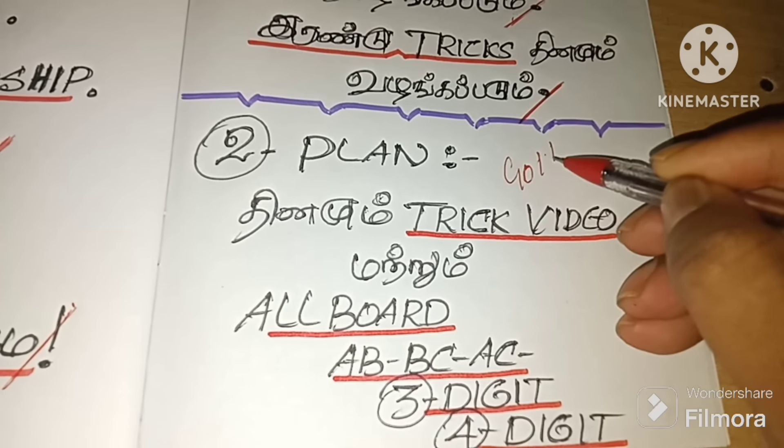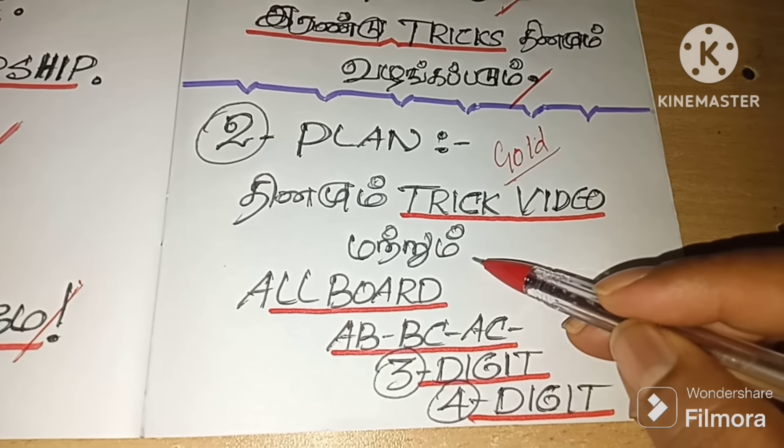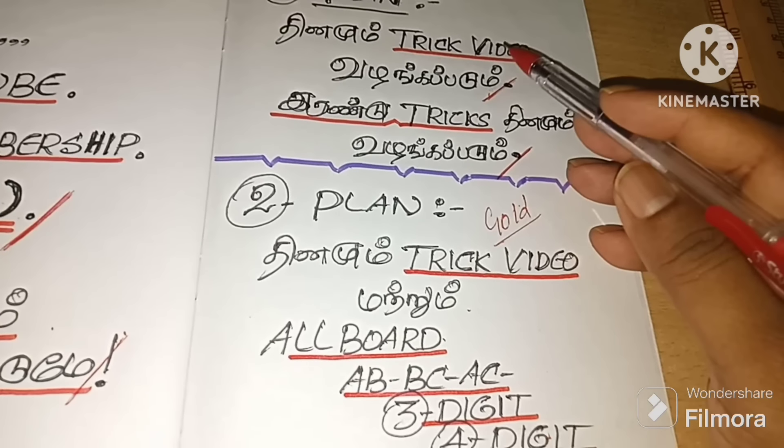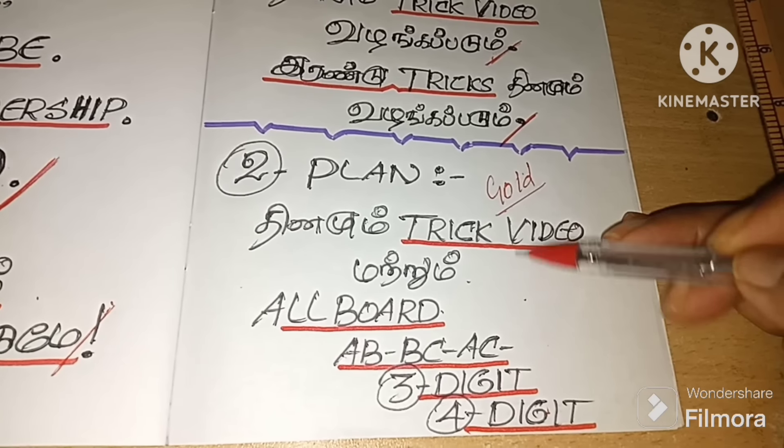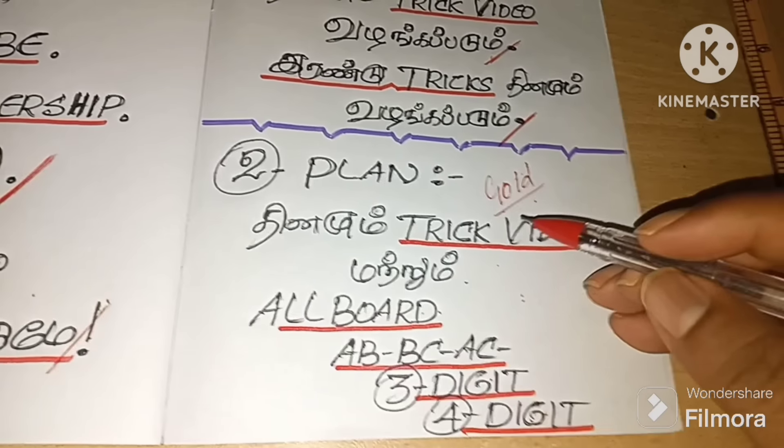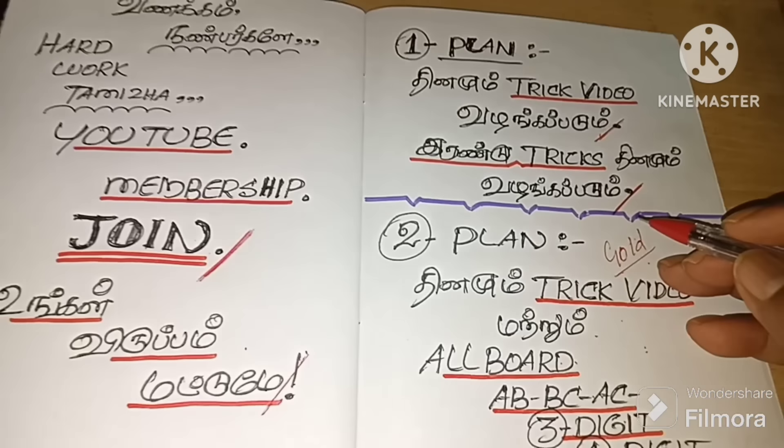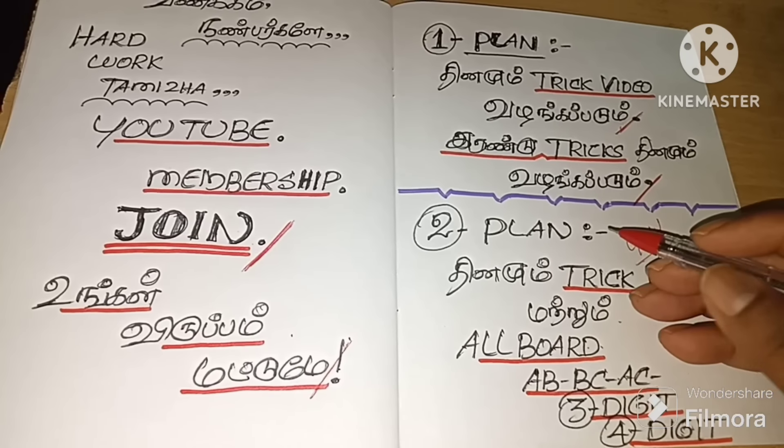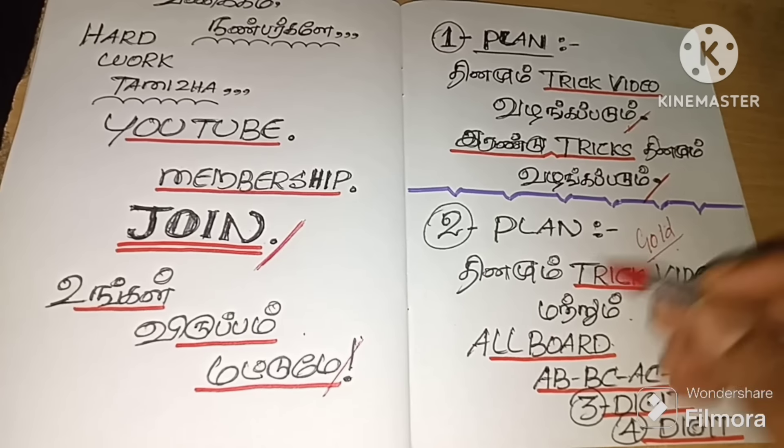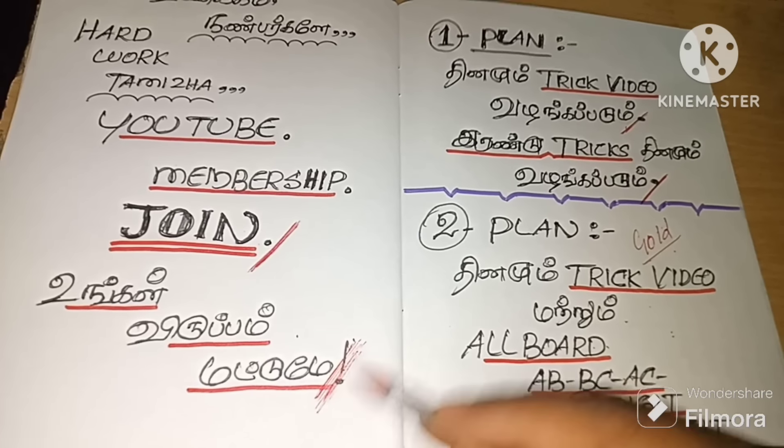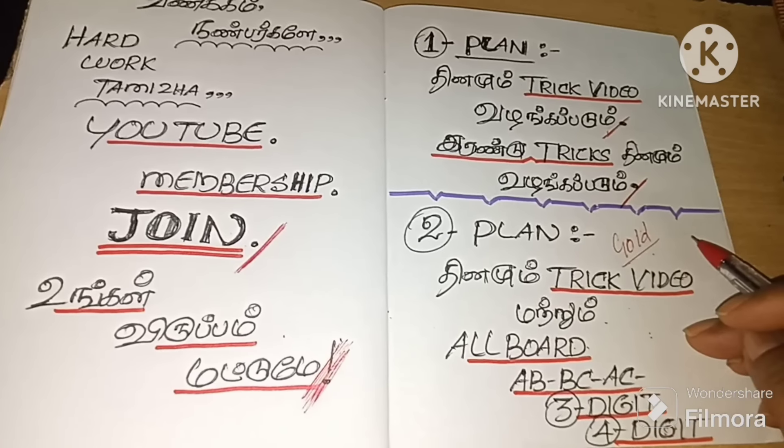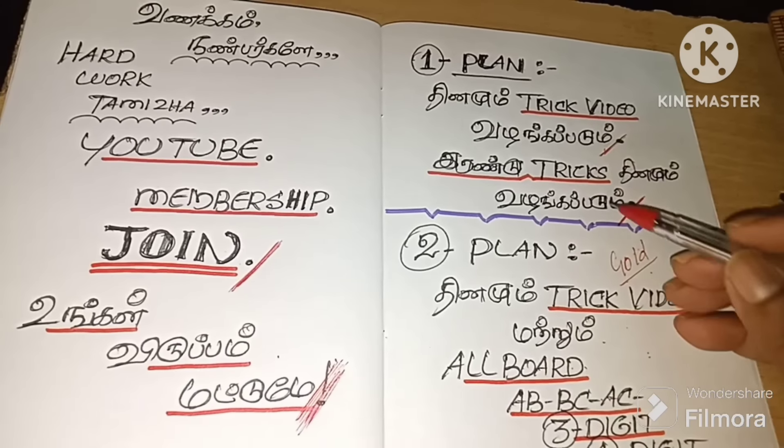This is a plan. This is a gold plan. If you want to join in this, you can also join the tricky video. It is also important to do all boards, AB, BC, AC, 4 digits. If you want to join in this plan, try to join in the first place. Come in and join the video. Let's take a video to our website.